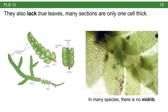Bryophytes also lack true leaves. It may look on close inspection like some bryophytes have something similar to leaves, but they're not quite true leaves. One of these leaf-like structures is actually comprised of a layer of cells just one cell thick. In many species there's no midrib, and they're free from any kind of venation that you would see in a typical leaf.